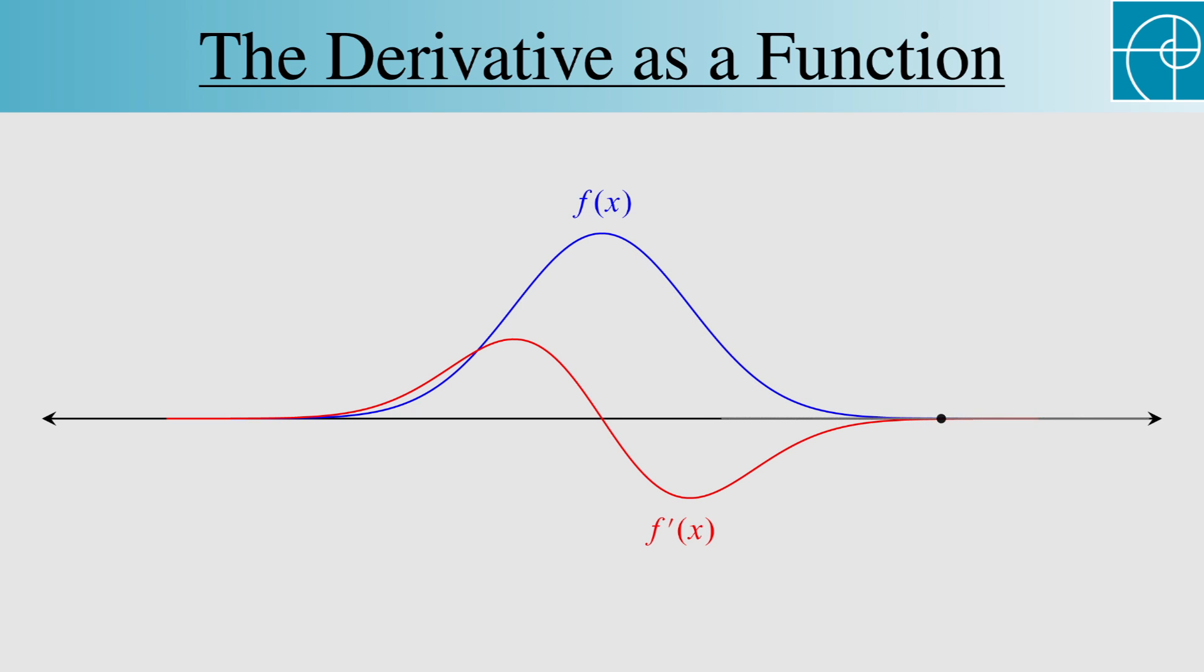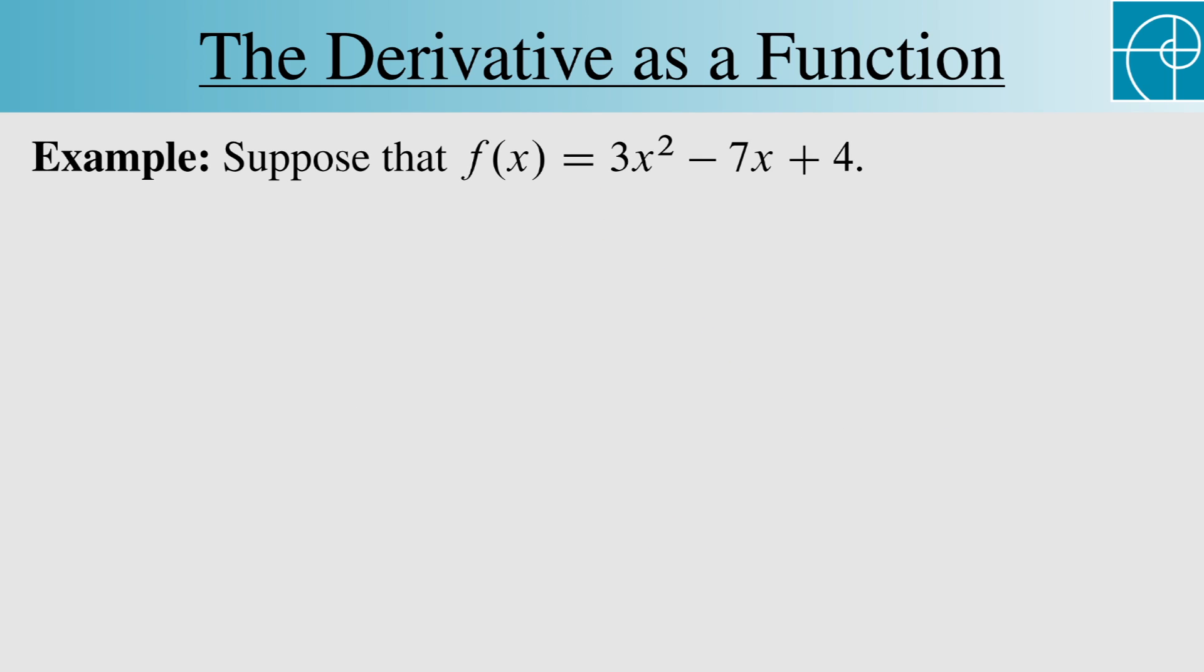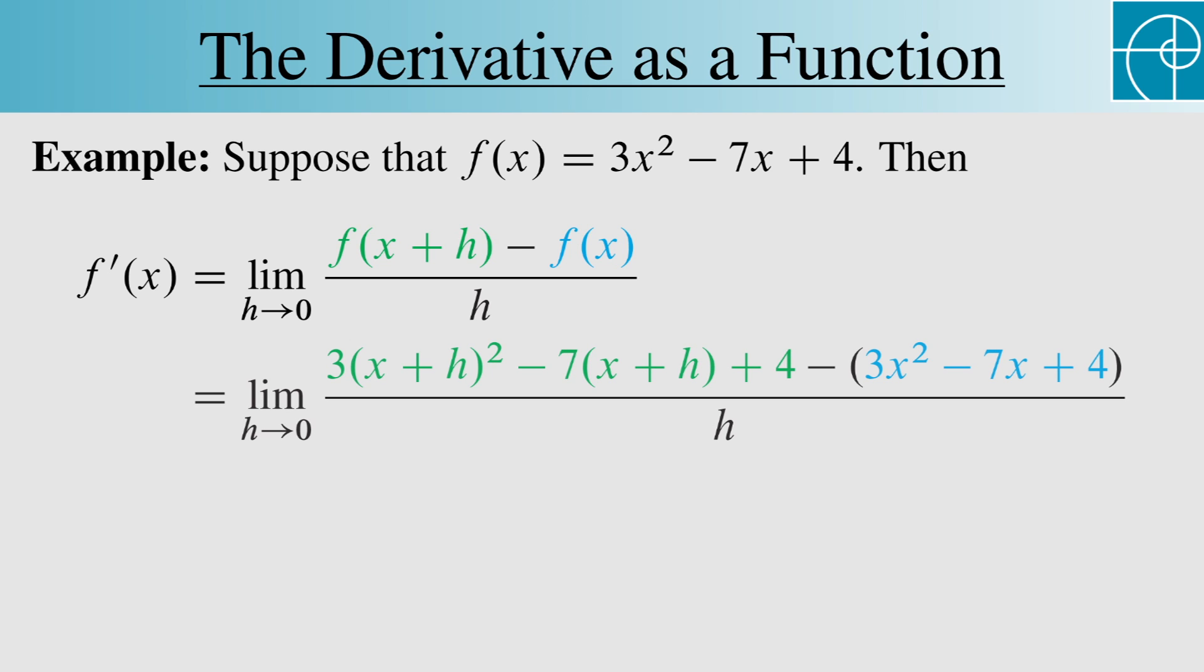Let's now compute a derivative. Suppose that f equals 3x squared minus 7x plus 4. Then, by definition, the derivative is this limit. We replace f using the formula for f and simplify. When we take the limit, we get 6x minus 7.